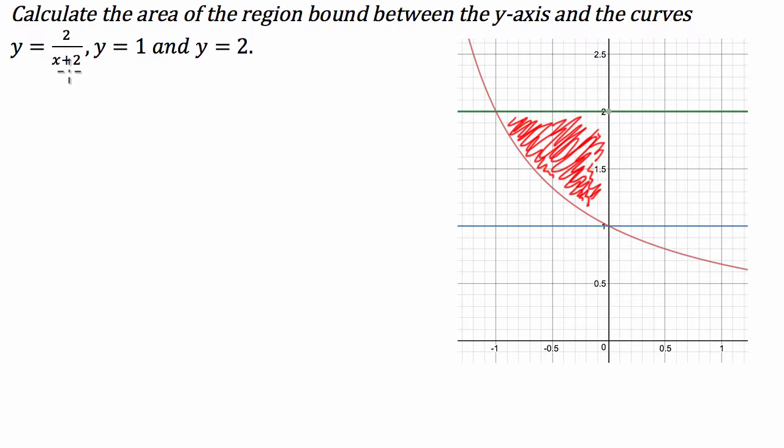we're going to have to make x the subject of this and y be the independent variable. So then we can integrate with respect to y rather than with respect to x. Now the lines of y equals 1 and y equals 2, we don't have to do anything with them because basically they're just the boundaries of our integration.